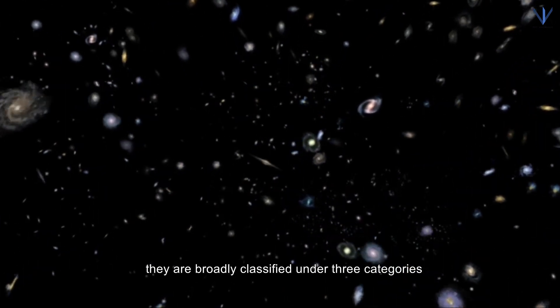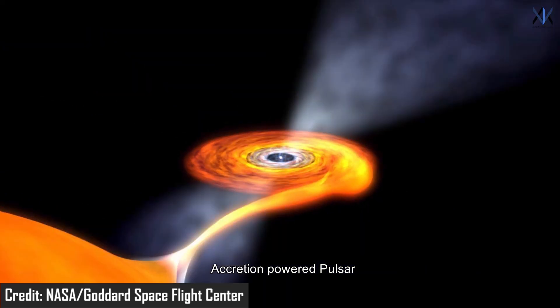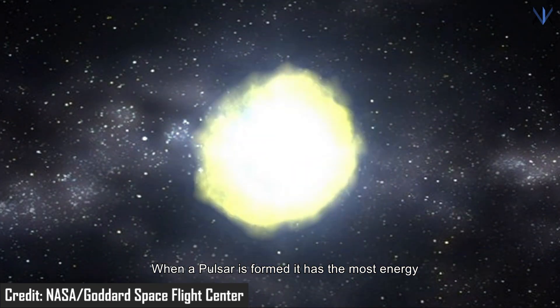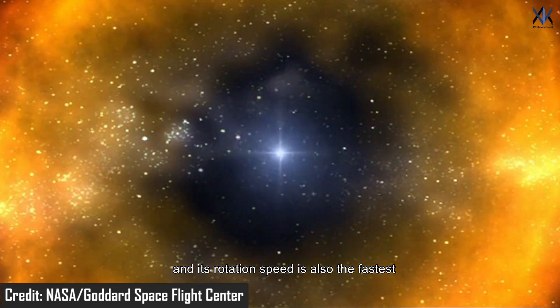They are broadly classified under three categories: rotation-powered pulsars, accretion-powered pulsars, and magnetars. When a pulsar is formed, it has the most energy and its rotation speed is also the fastest.